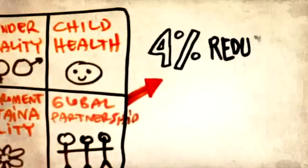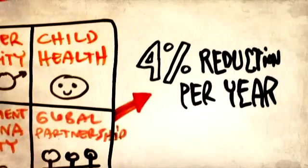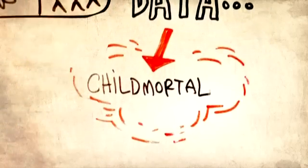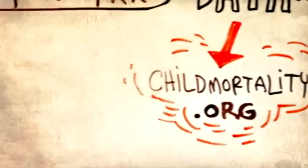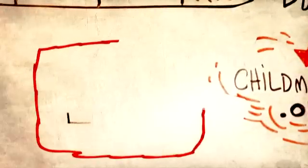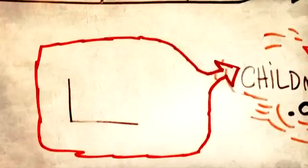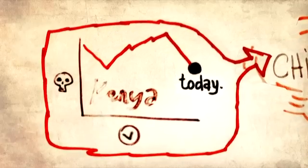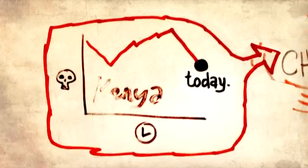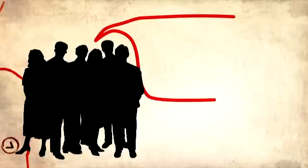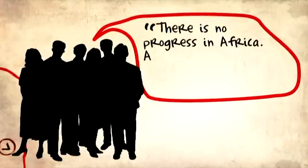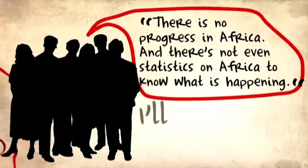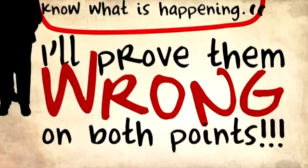There's a second reason I like these Development Goals, and that is because each and every one is measured. Take child mortality. The aim is to reduce child mortality by two-thirds from 1990 to 2015 — that's a 4% reduction per year. But then I hear people saying there is no progress in Africa, and that there aren't even statistics in Africa to know what is happening. I'll prove them wrong on both points.